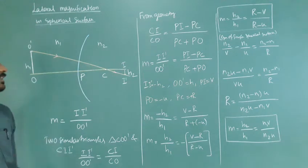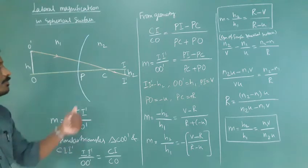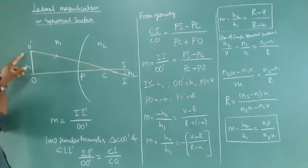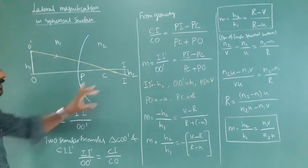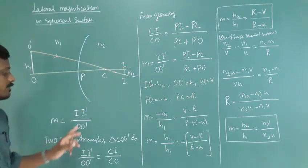Lateral magnification or transverse magnification is the ratio of height of the image divided by height of the object. This is the object, this is the image. So II' by OO'.